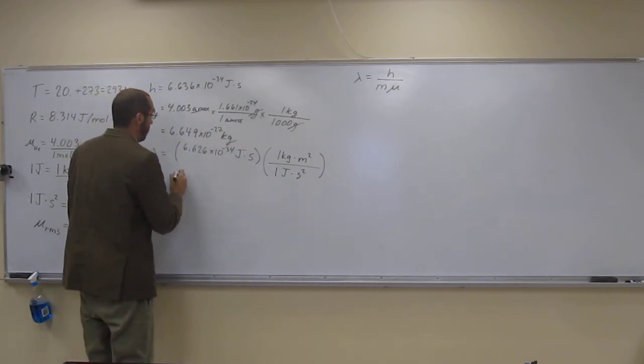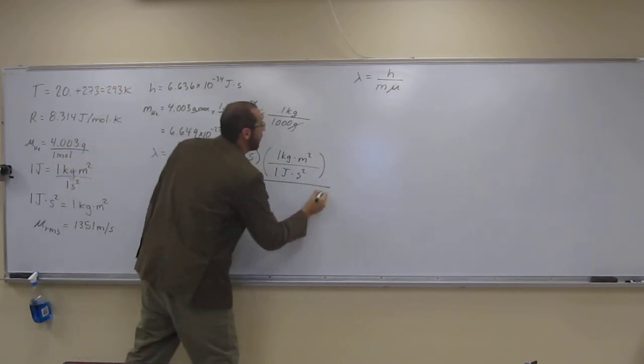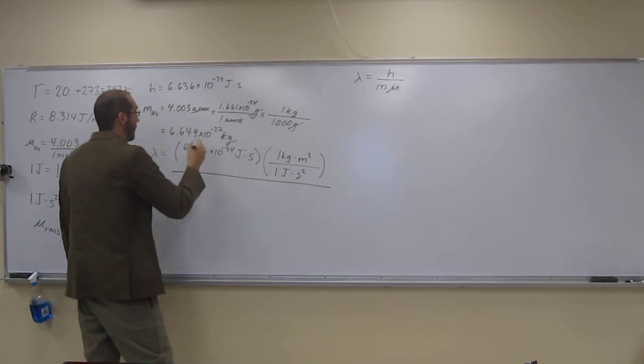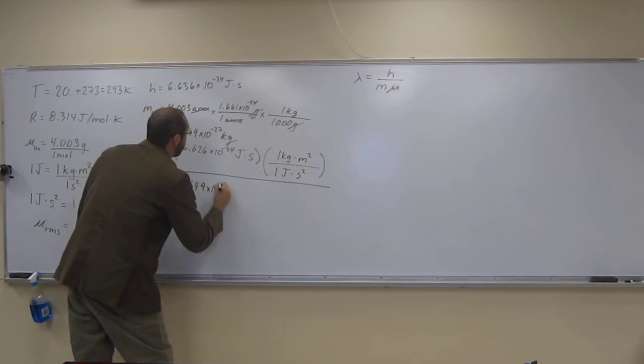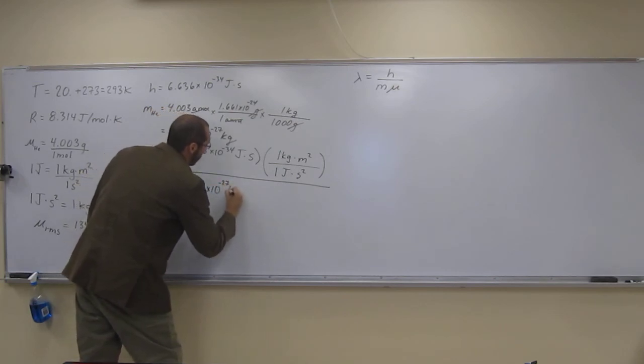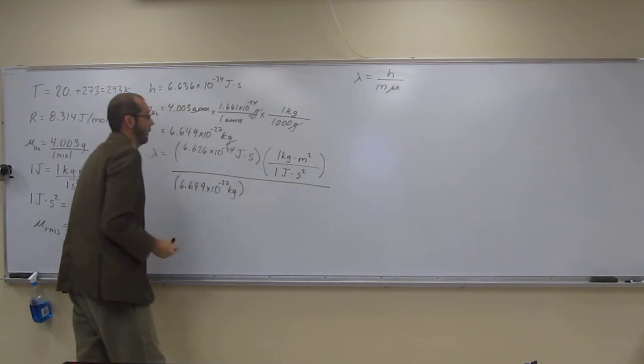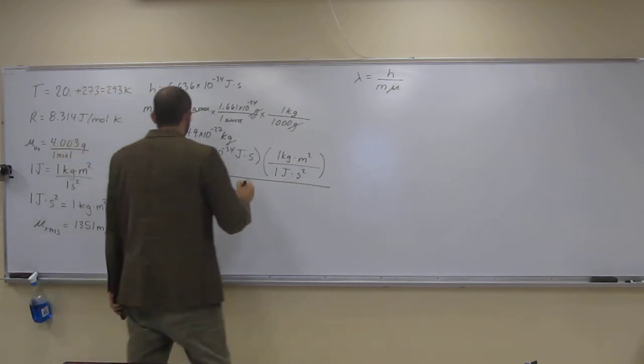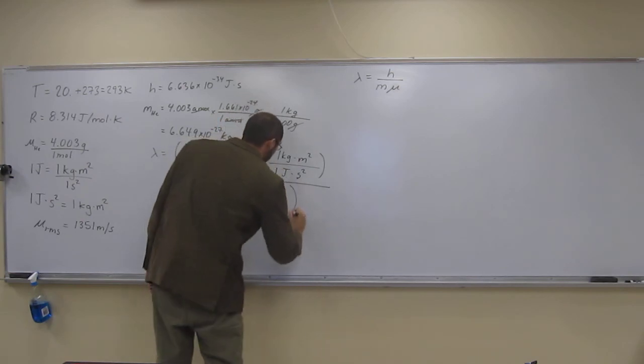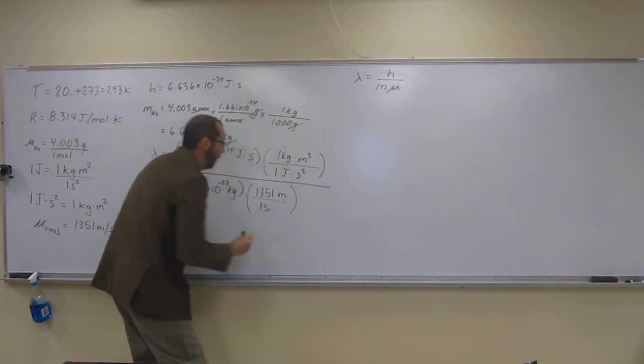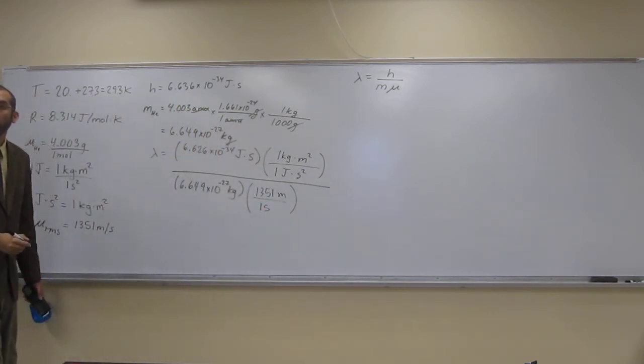So, divide that by the mass that we just got, 6.649 times 10 to the negative 27th kilograms, times the root mean squared speed, 1351 meters per one second, like that.